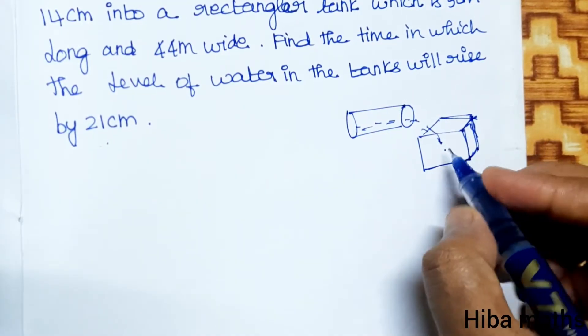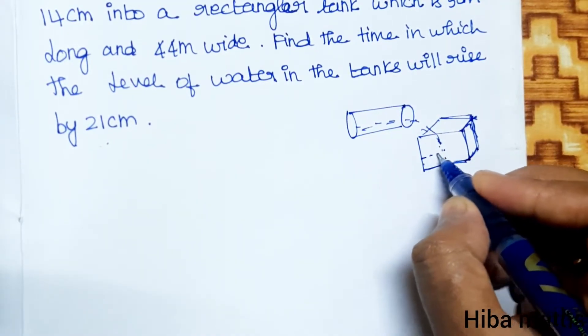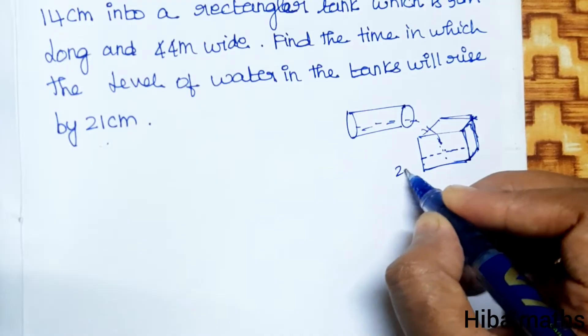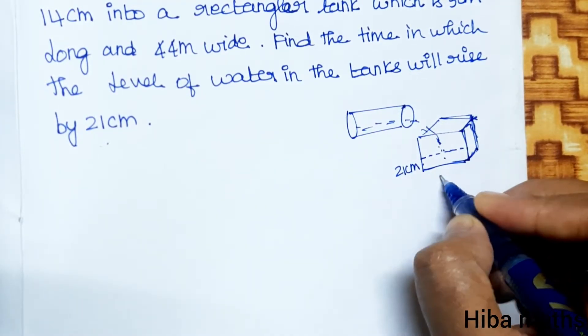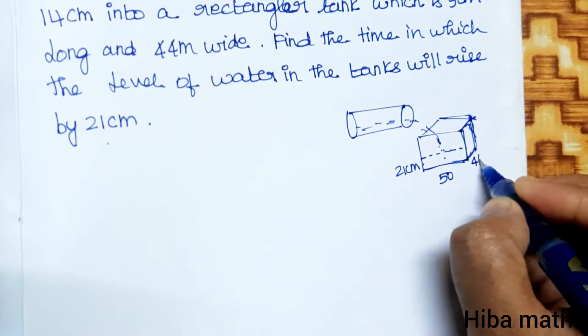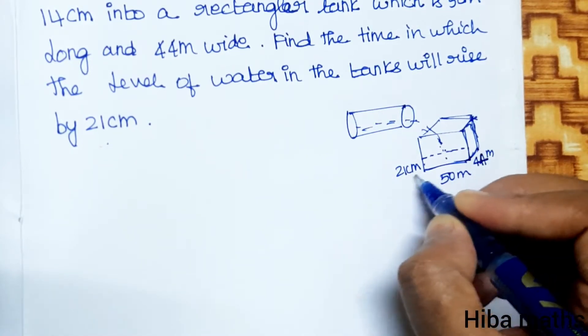The level height that rises is 21 cm. Length is 50 meter, breadth is 44 meter. This is centimeter, so we need to convert to meter.